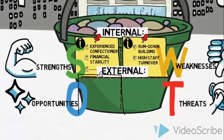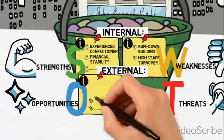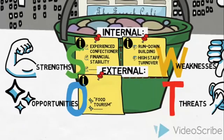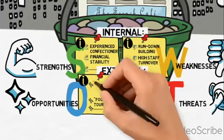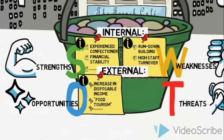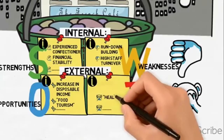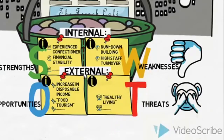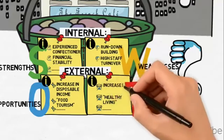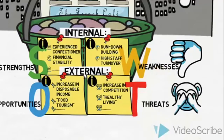Some of the opportunities discovered are food tourism: an increased number of tourists actively seek out high-quality food experiences. And a general increase in disposable income. Some of the threats revealed are an increased focus on healthy living, which could be a threat considering the high fat and sugar content in the French Café's products. And locally, competition has increased considerably, with many new restaurants and cafés opening up.